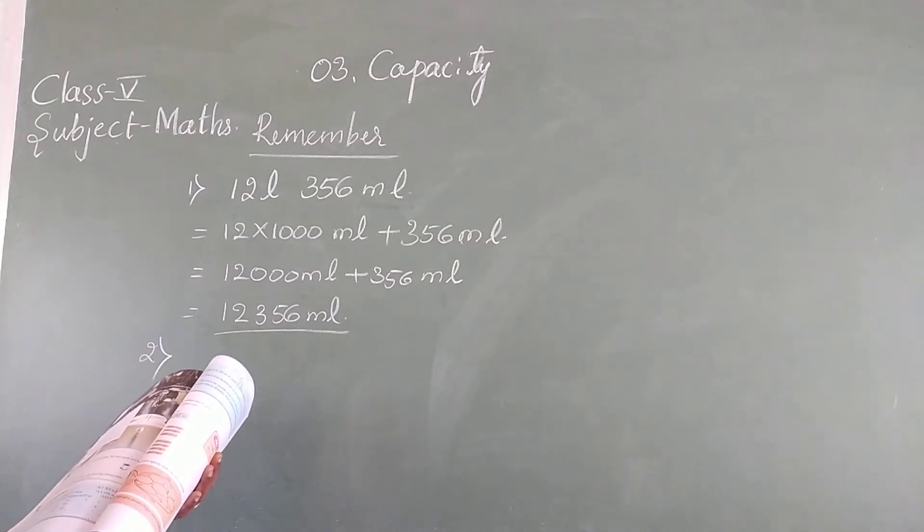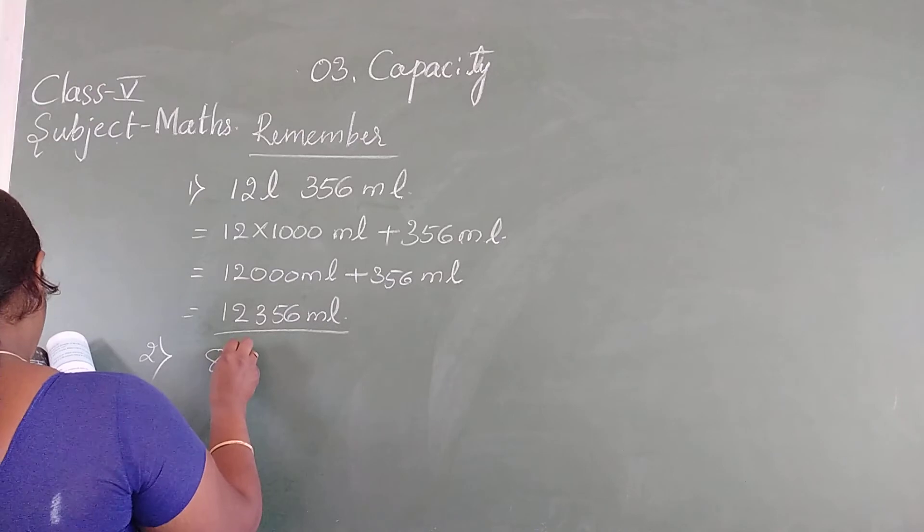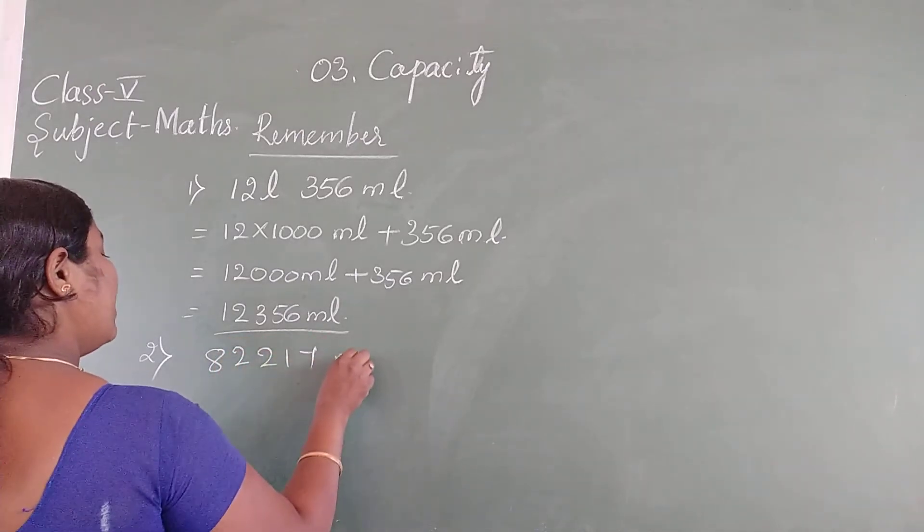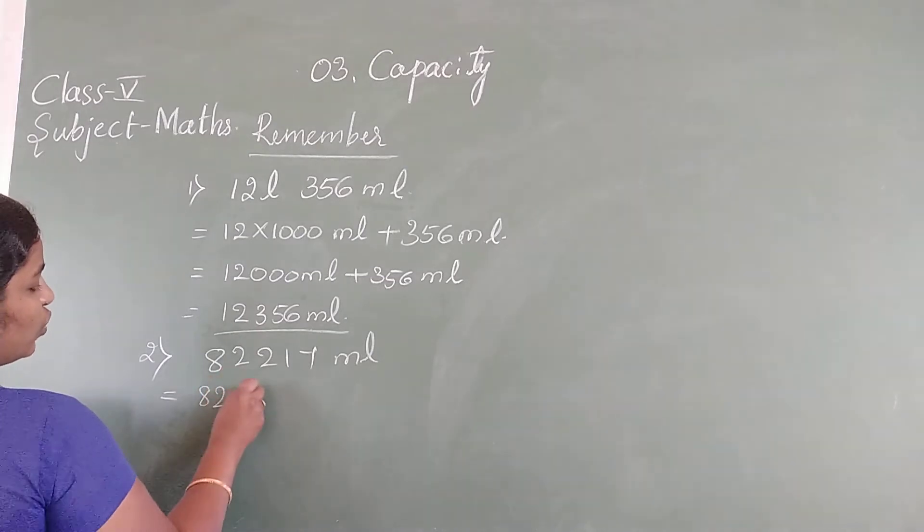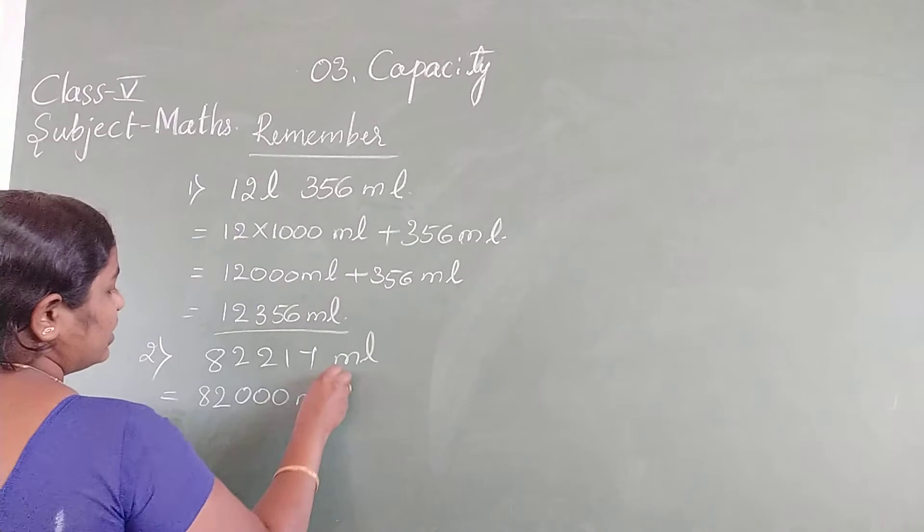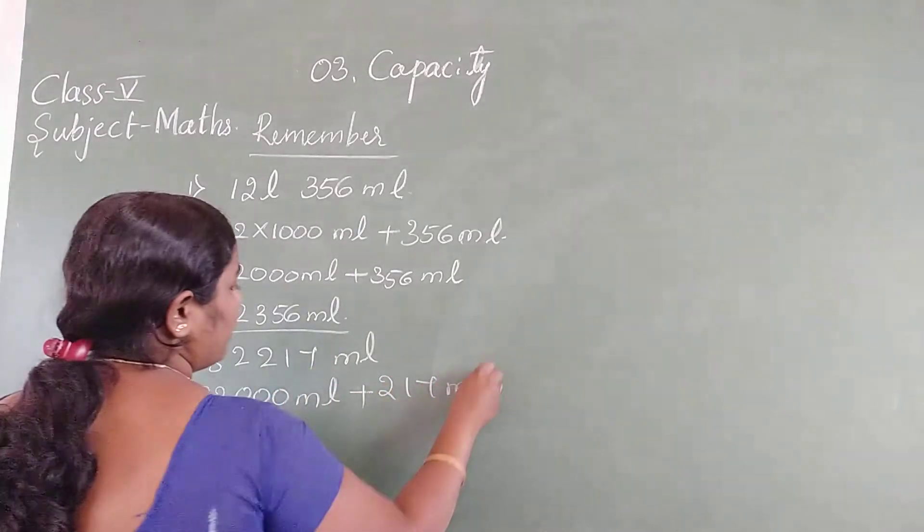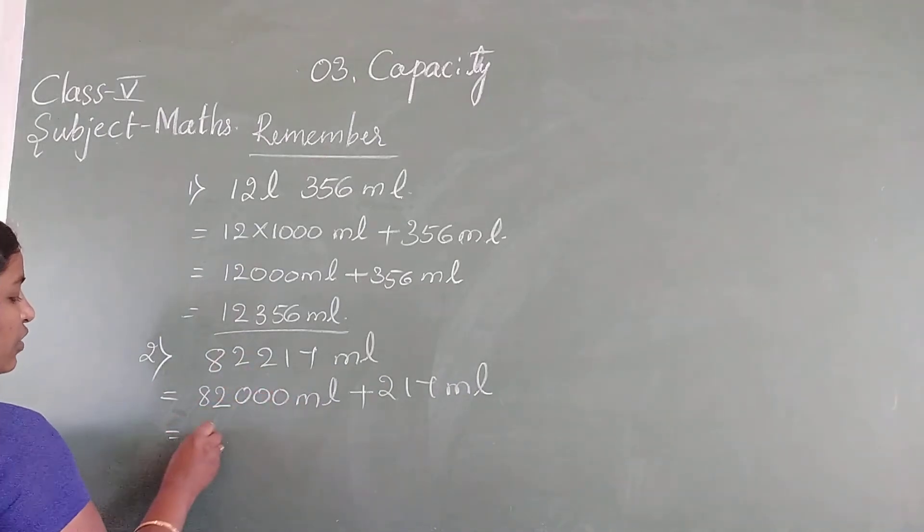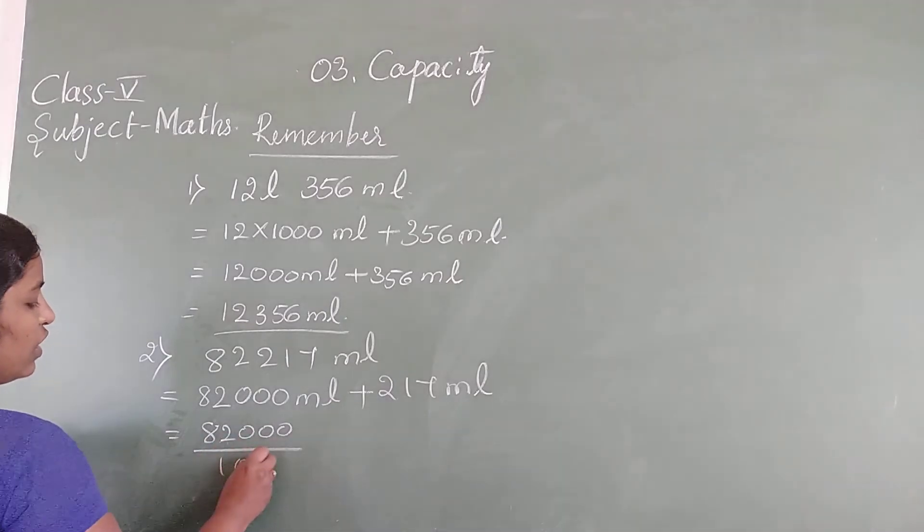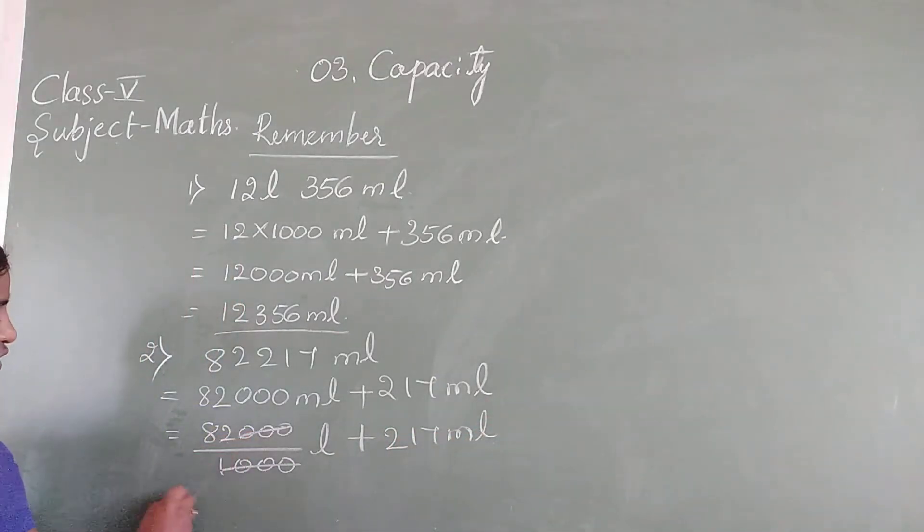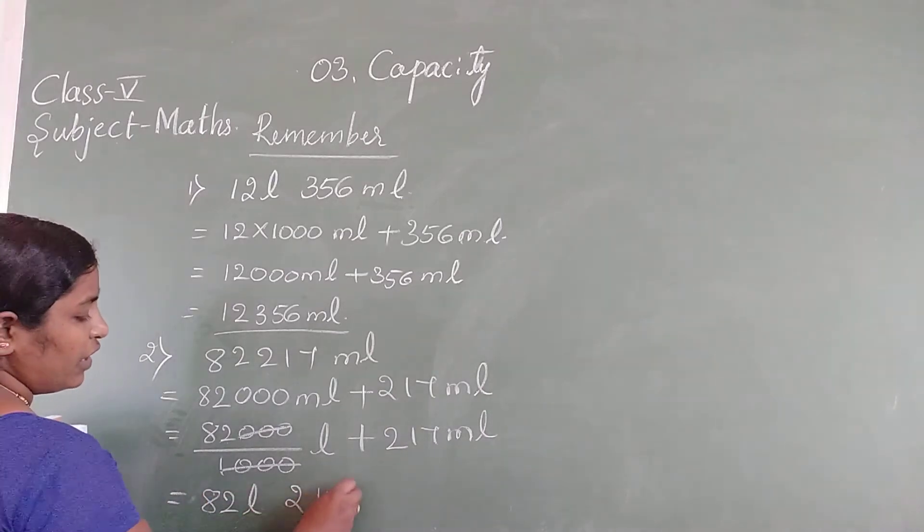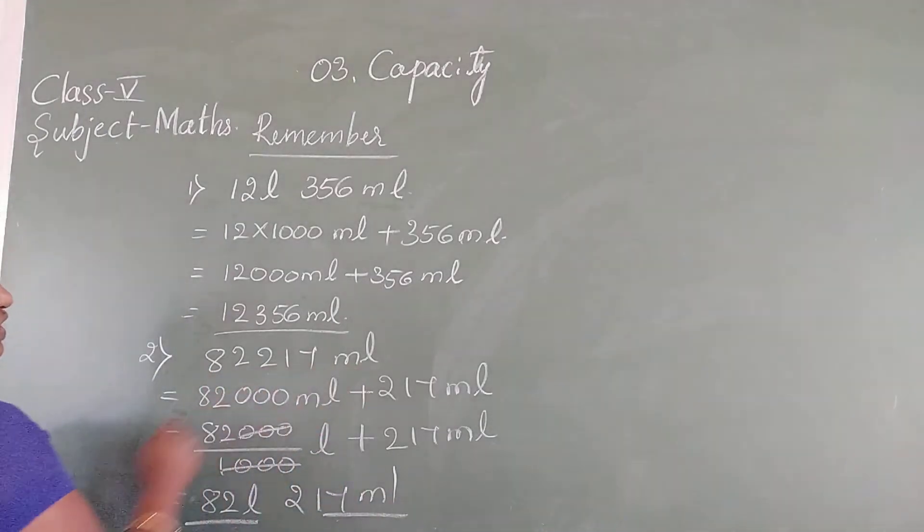Second question: convert the following into litres and millilitres. 82,217 ml. We should convert as litre and millilitre. So we expand this: 82,000 ml plus 217 ml. 82,000 divided by 1000 equals 82 litre, plus 217 ml. We have expressed 82 litre and 217 ml.